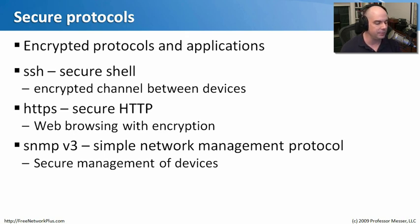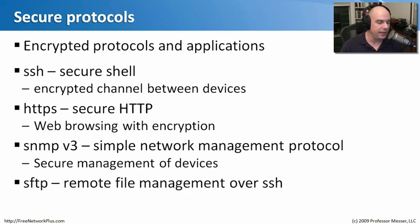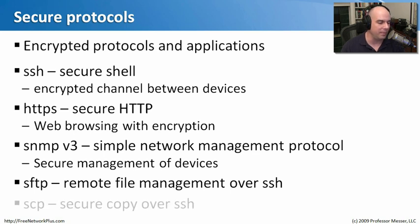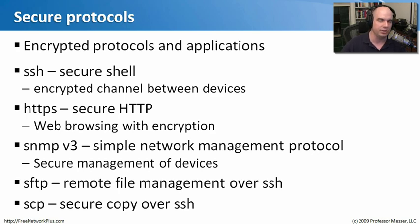SNMP version 3 addressed the shortcomings of versions 1 and 2 by encrypting the information sent back and forth to infrastructure devices. SFTP allows remote file management using the SSH protocol — you can upload files, get a listing of files, and download files, all encrypted, so nobody can rebuild those files. SCP is a simplified way to copy files, and that copy methodology also uses SSH. SSH is a robust way to encrypt data back and forth, so it makes sense that other applications would take advantage of the secure shell protocol.